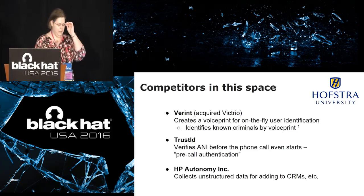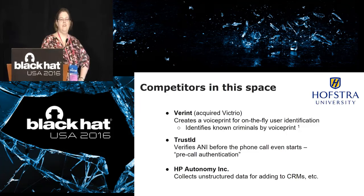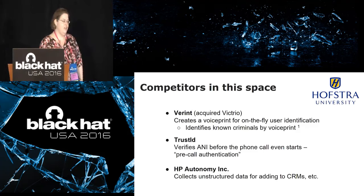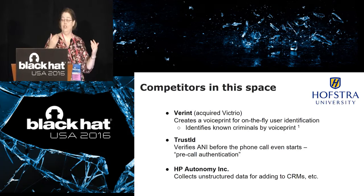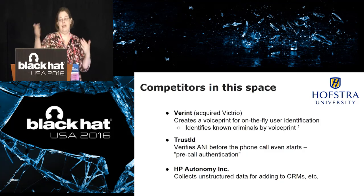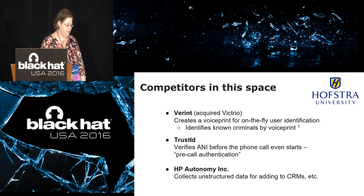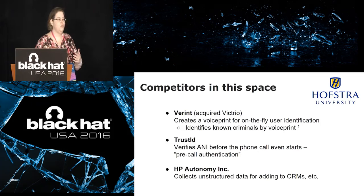Some other competitors in this space: Verint, which acquired Victrio, creates a voice print — not a phone print, but a voice print identifying that person — and will identify known phone scammers. Of course, all you need to defeat that is a non-known phone scammer, so this is a blacklisting technology. Trusted verifies ANI before the phone call even starts — that's the phone company switch data that actually knows where a call is coming from. And Autonomy, acquired by HP, really just captures unstructured data to add to your CRM. These are the tools currently out there; they may or may not solve the problem.